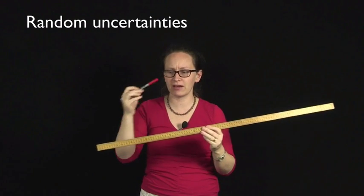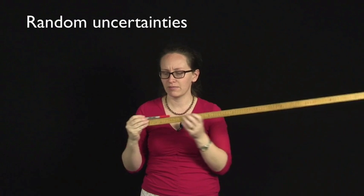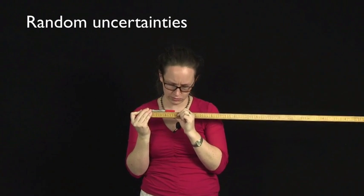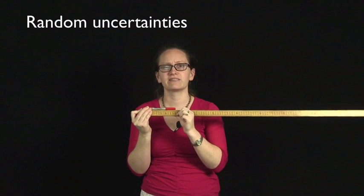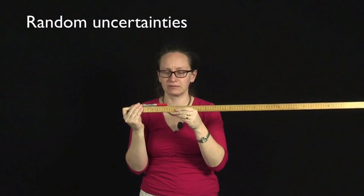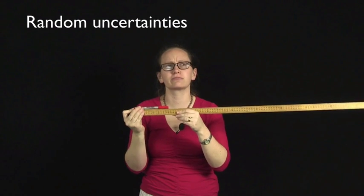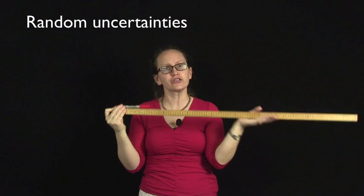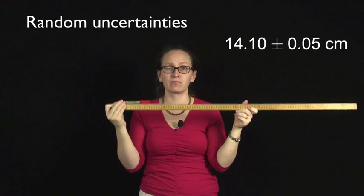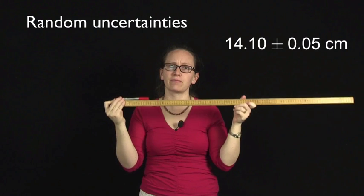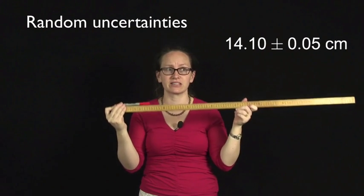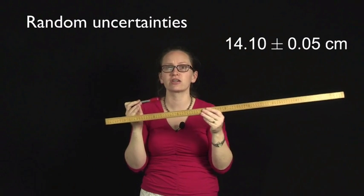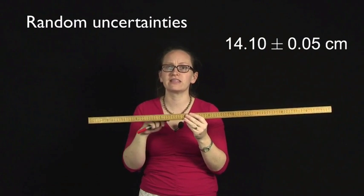So for example, if I were to measure this pen by aligning it perfectly with the end of the ruler, the ruler tells me that this pen is 14.1 centimetres long. Now in order to write down the length of the pen, I should write it as 14.10 plus or minus 0.05 centimetres long in order to account for the limitations of the precision of this metre ruler.